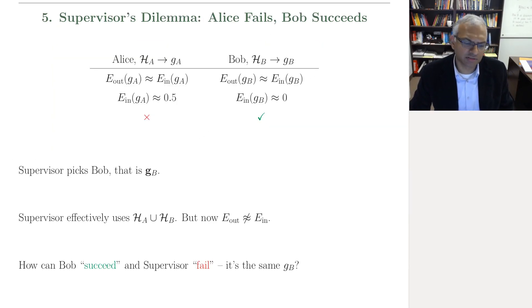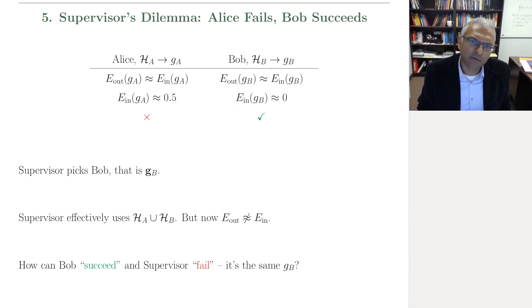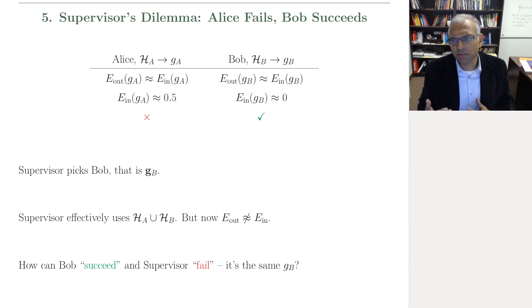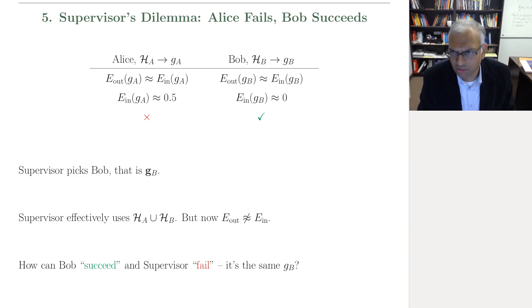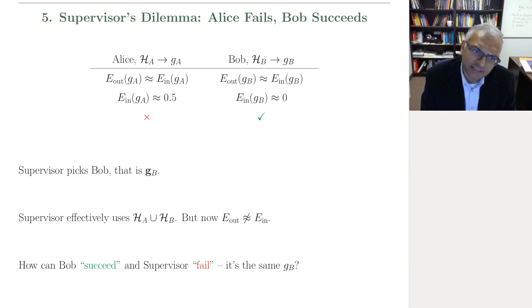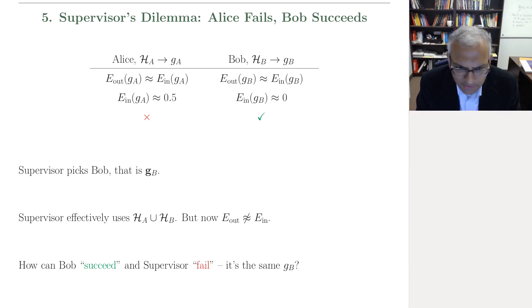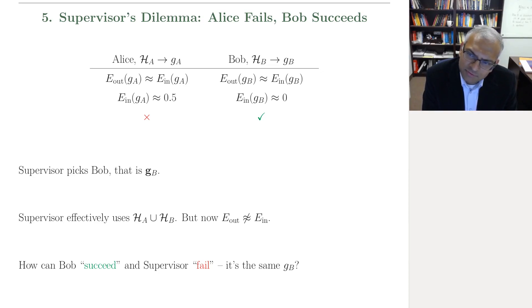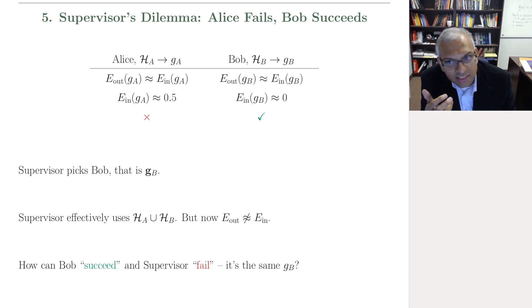The last question — in some senses the most interesting — is the supervisor's dilemma. Alice fails, Bob succeeds. The supervisor picks Bob, but when he applies the Hoeffding error bar for the union hypothesis set, he finds E_in is not close to E_out, so he declares failure. How is it possible that Bob says he succeeded and the supervisor says he failed, but it's the same hypothesis? You have to realize this is a probabilistic analysis, and that's when all these subtle things occur.